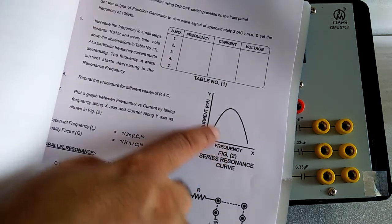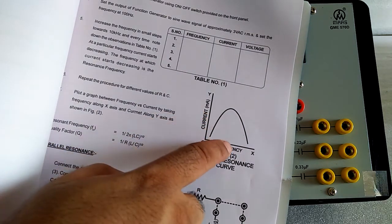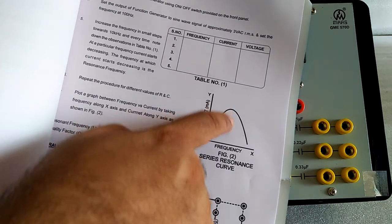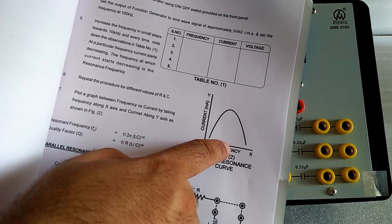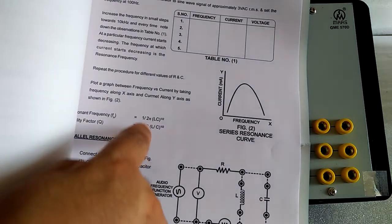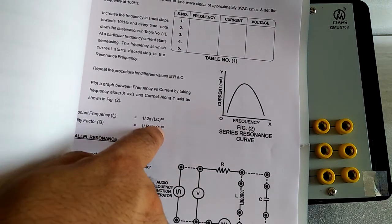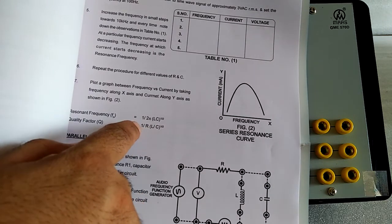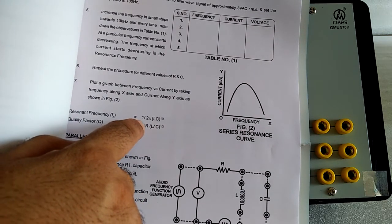Make the graph between frequency and current. From the graph, you can find the resonance frequency from here and by calculation, put the value of L and C in the formula, then find the calculated frequency.